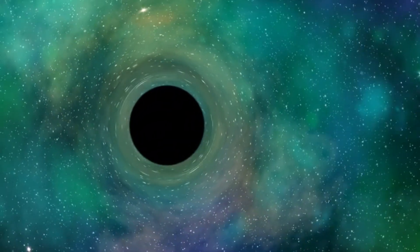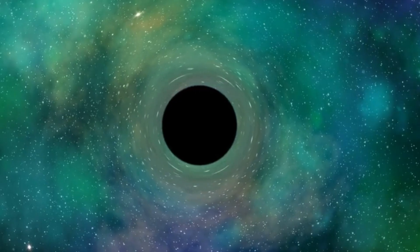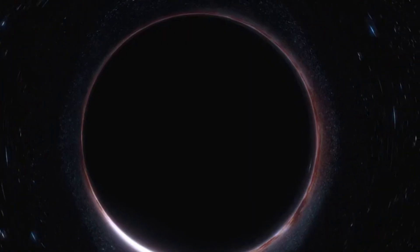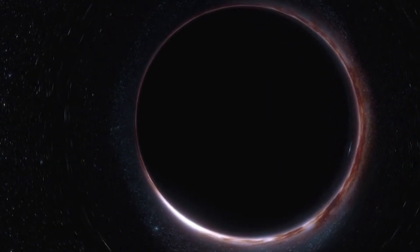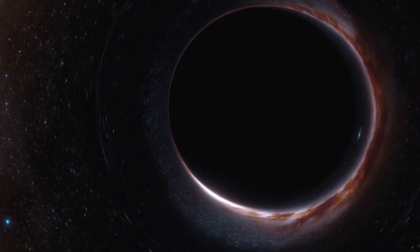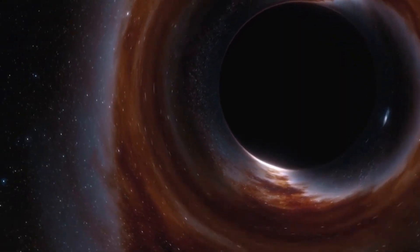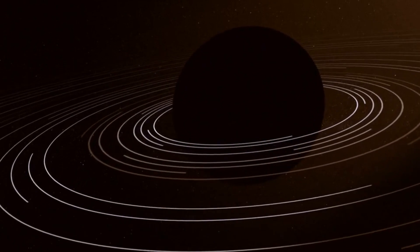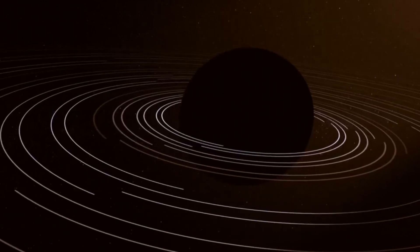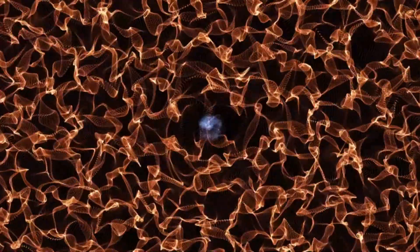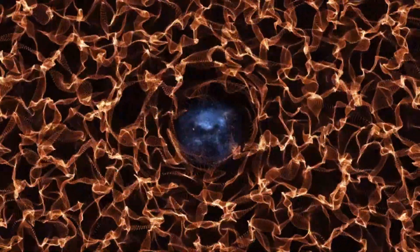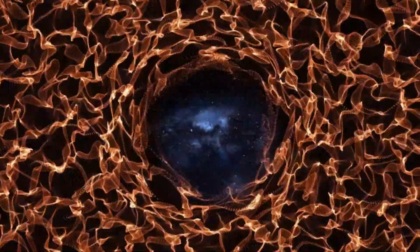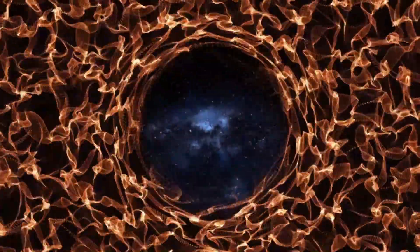For the first time, scientists observed light bending around the black hole and surviving its immense gravitational pull. This groundbreaking observation confirmed a long-standing prediction made by Einstein's theory of general relativity. Einstein had theorized that light could be bent by the intense gravitational field of a massive object like a black hole. This discovery provided yet another confirmation of his revolutionary ideas, once again highlighting the brilliance of his insights into the nature of gravity and space-time.